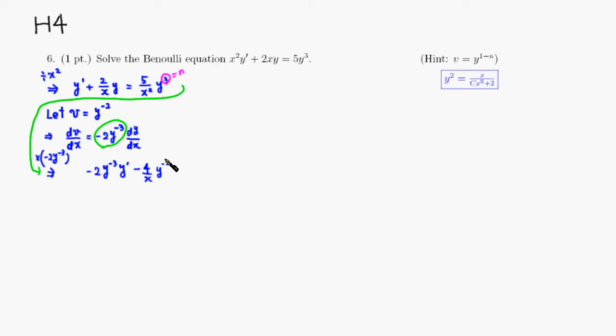And over x, and y to the negative 3 and y, so y to the negative 2. Then here, it's equal to negative 2 times 5 is negative 10 over x squared, then you have y to the negative 3 cancel out with y cubed.